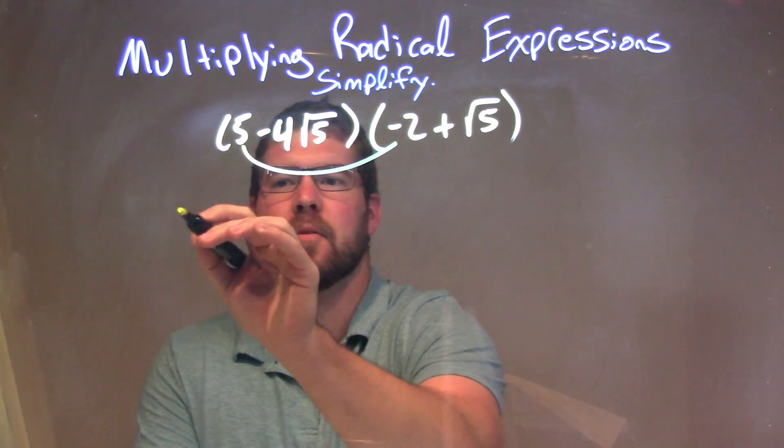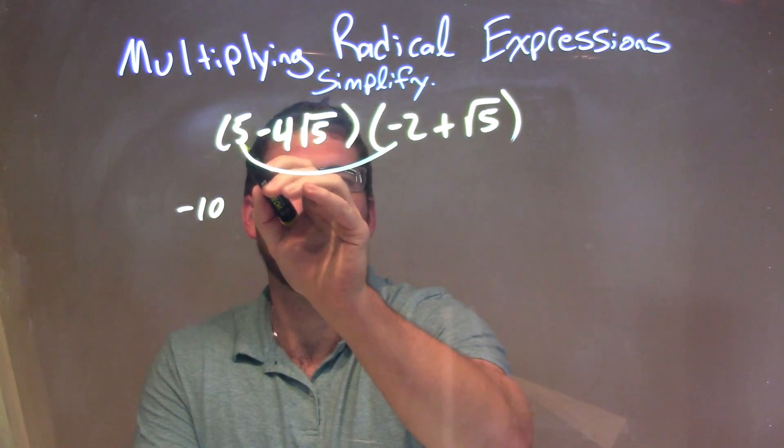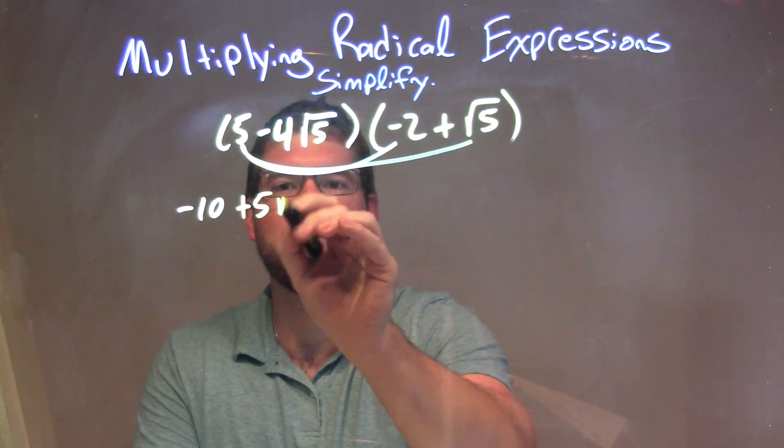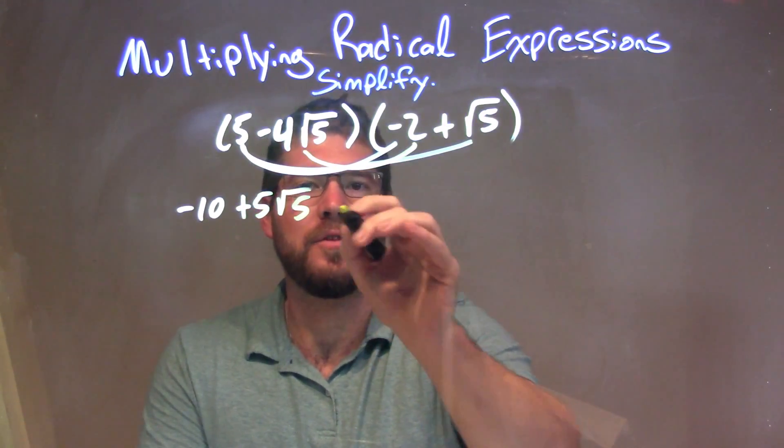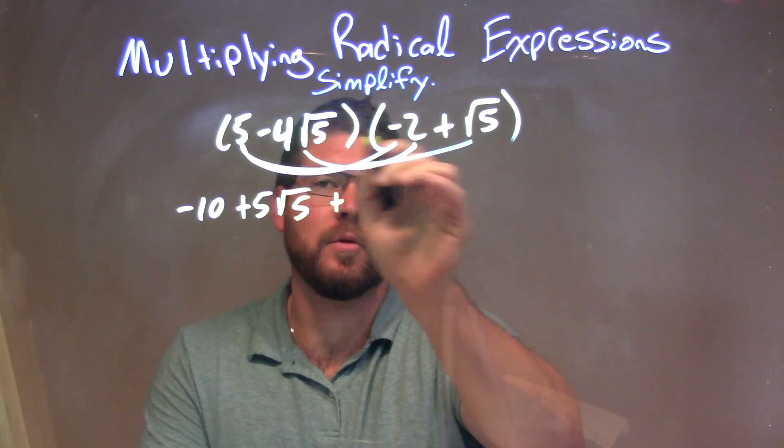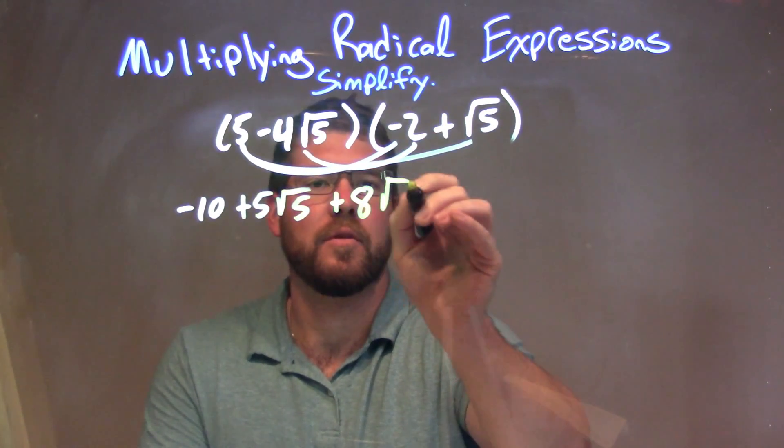5 times the minus 2 is a minus 10. 5 times the square root of 5 is just 5 square root of 5. Minus 4 square root of 5 times the minus 2. 2 negatives make a positive. 2 times 4, or 4 times 2 is 8, square root of 5 here.